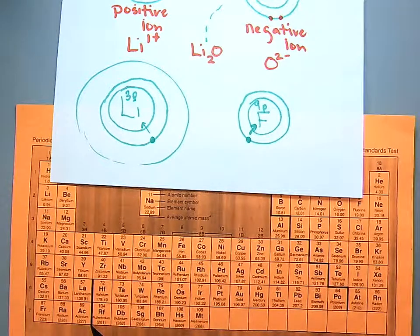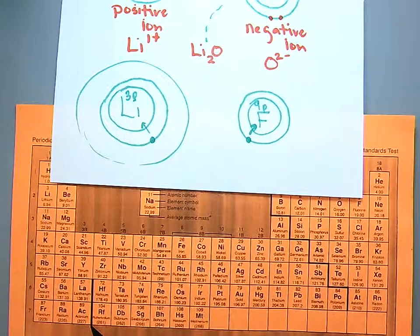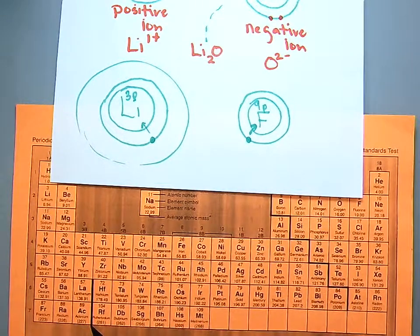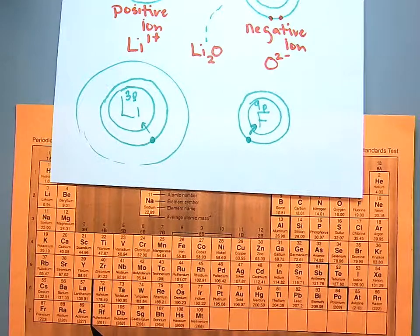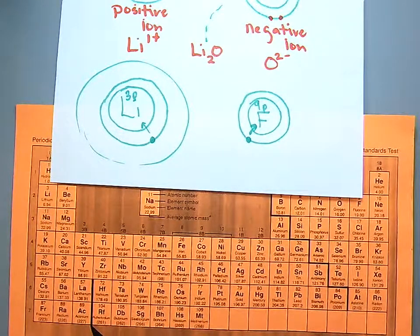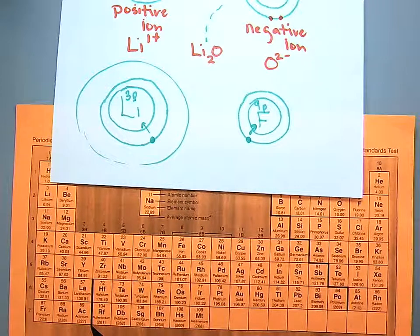Let's go through a few quick review questions. Ionic bonds always happen between what two things? Metals and non-metals. Think about water — is water an ionic bond? No, because it's two non-metals bonded together, so that's not an ionic bond.